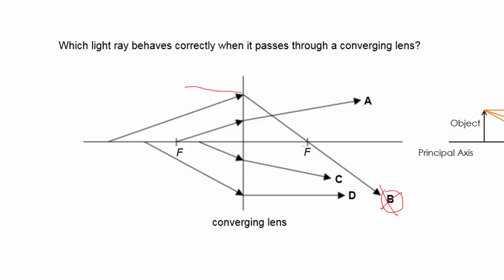You find that A also shares the same characteristic because it comes from a focal point. So as it passes through the lens it must be parallel to the principal axis. Again, A will also not be correct. Then you look at D.